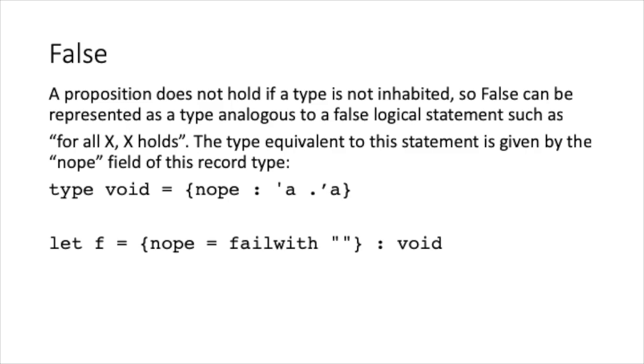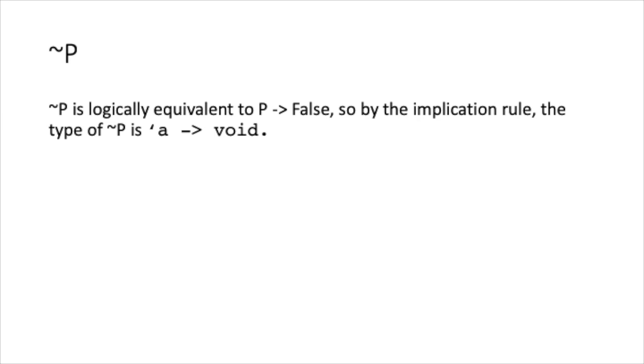The NOPE field is analogous to the logical statement for all x, x holds, which can't be true because there are some logical propositions x that do not hold. We can represent the logical negation of p as p implies false. Intuitively, this means that p can't be true, because if it were, we would be able to apply the implication and logically imply that false must hold. Following the rule for implication, the computational equivalent of negated p is a function from p to the type void that we defined in the previous slide.